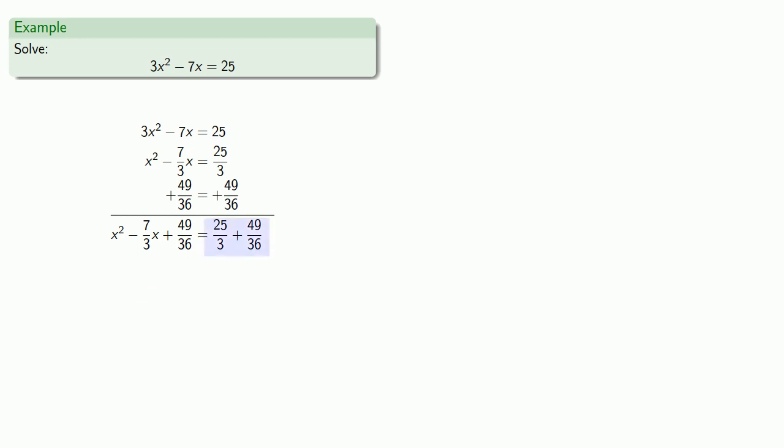And so we'll add 49/36 to both sides of our equation. My right-hand side is the sum of the fractions 25/3 plus 49/36, which we should add. Now all of this was done so the left-hand side would be a perfect square. So we need to factor the left-hand side. And now we can take the square root of both sides. Don't forget the plus or minus. And solve for x.